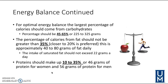For optimal energy balance, the largest portion of calories should come from carbohydrates — between 45 to 65 percent. Calories from fat should be no more than 35 percent, with a target closer to 20 percent. Protein should make up 10 to 35 percent of total energy intake.